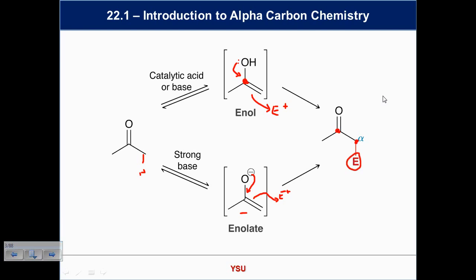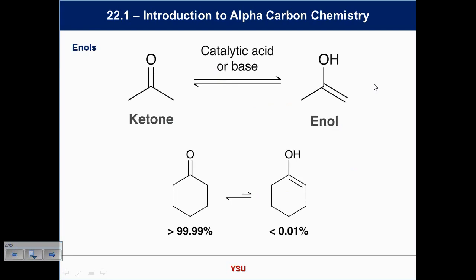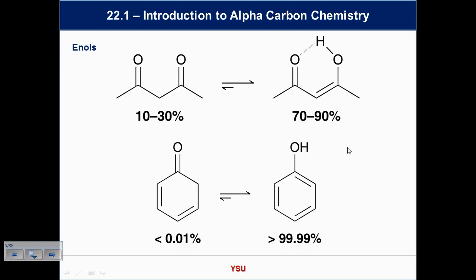Ketones often also exist as enols — but a typical ketone prefers to be the ketone, not the enol. The answer is bond strengths: the ketone is more stable than the enol by about 30 kcal/mol. So if you took the NMR spectrum, you'd see mostly ketone signals — very little enol. Ketones prefer to be ketones.